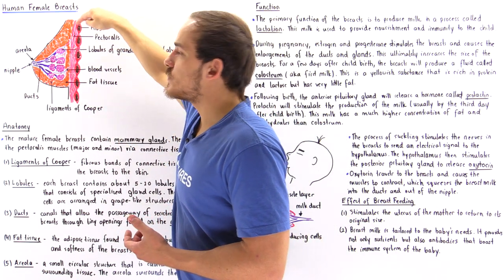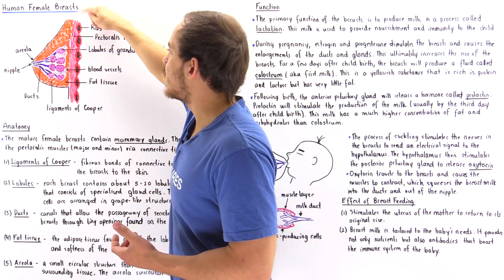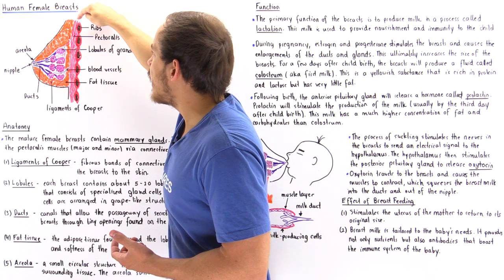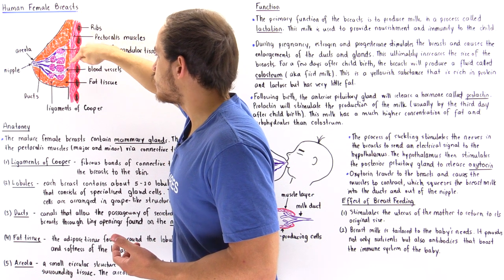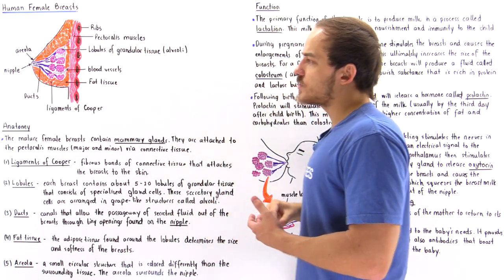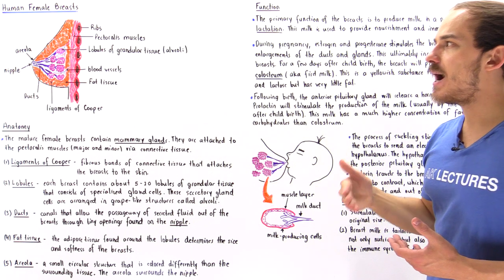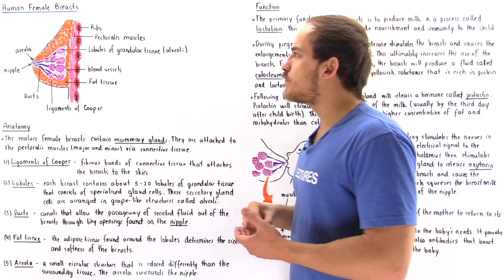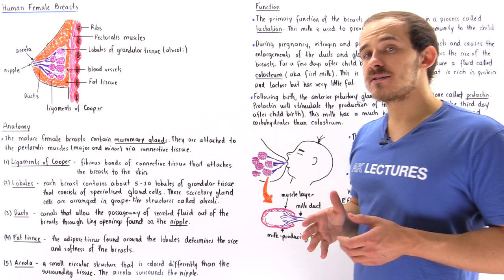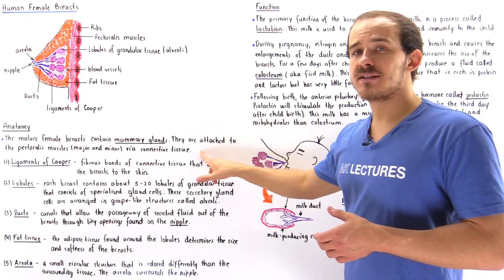Connecting the ribs are the intercostal muscles, shown in red. In front of the entire rib cage we have these muscles shown in pink, known as the pectoralis muscle. We have the major and the minor pectoralis muscle, and the pectoralis muscle is actually connected to the breast via connective tissue.